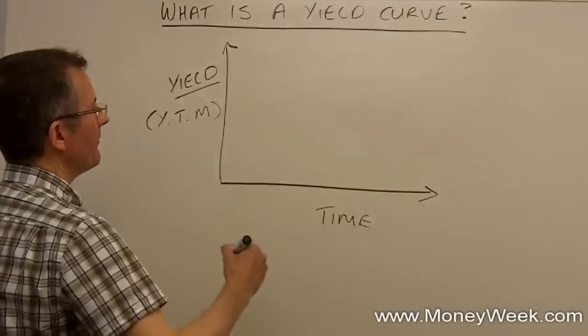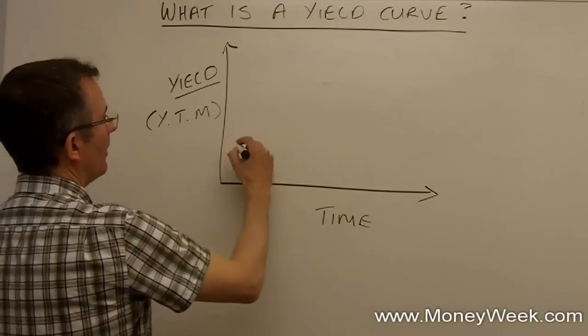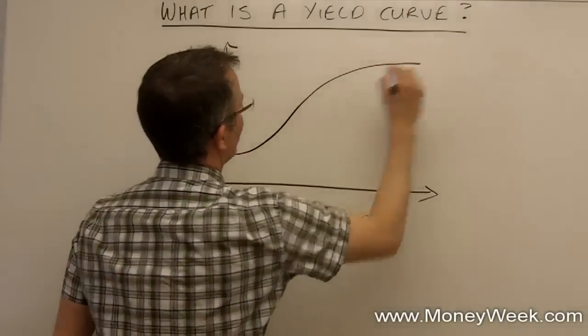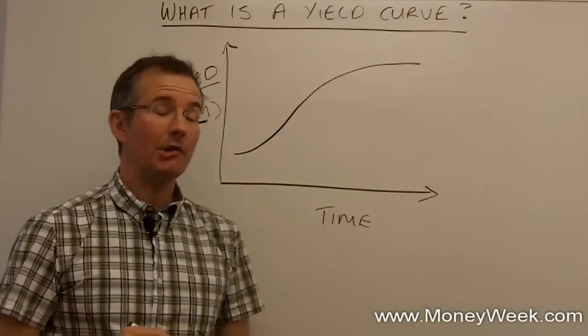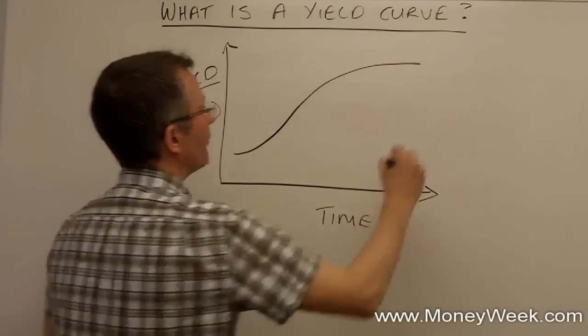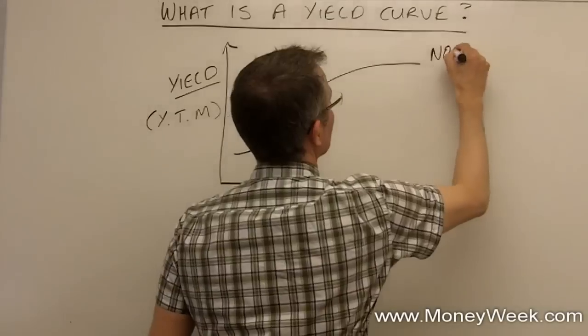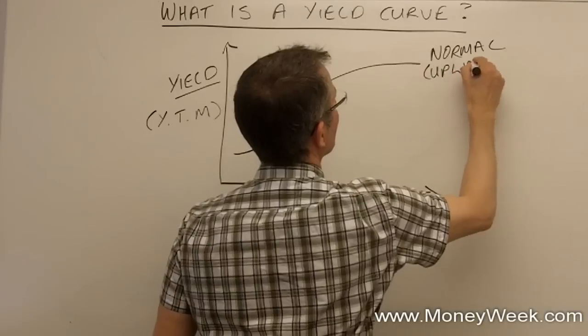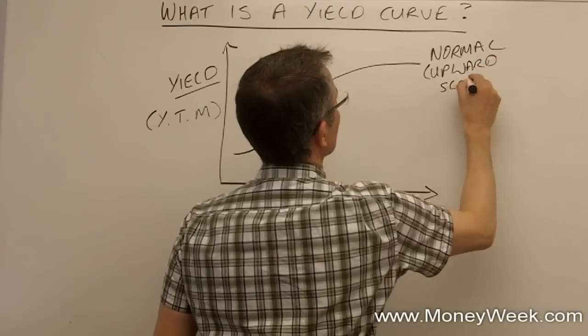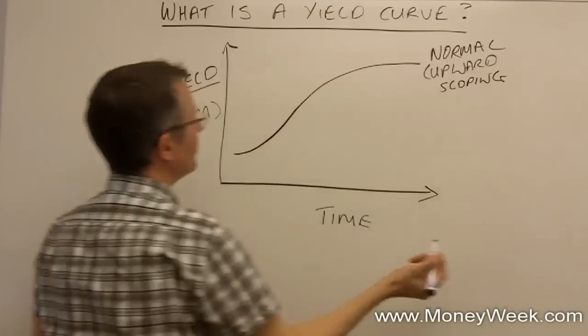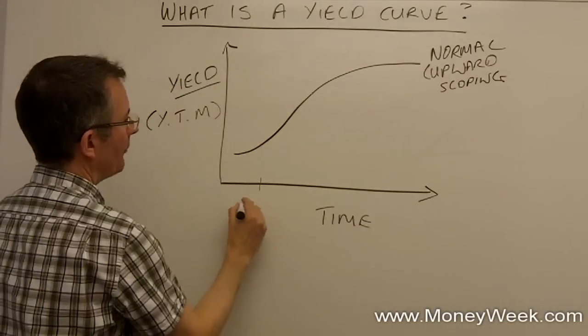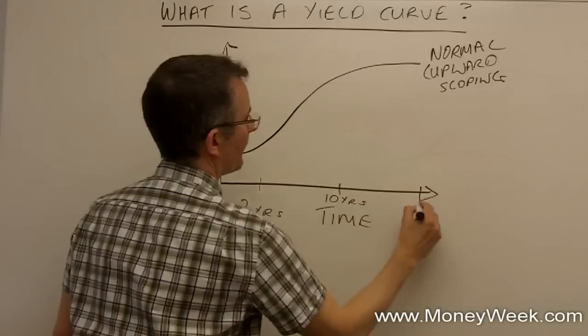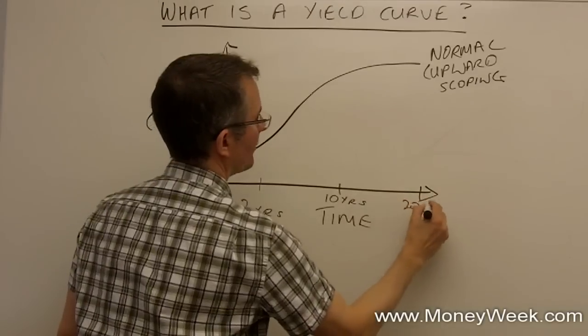And normally what you find is yield curves are upward sloping. So they might look a little bit like that. They can be any shape in theory. And that one's known as normal or upward sloping. And what it's suggesting is this. If that's sort of two years, that's ten years, and that's twenty years for argument's sake or even thirty.